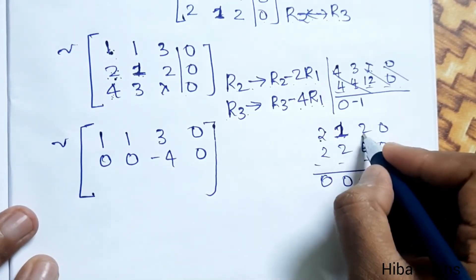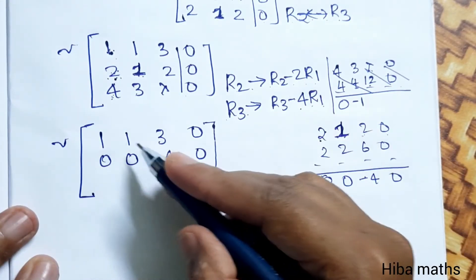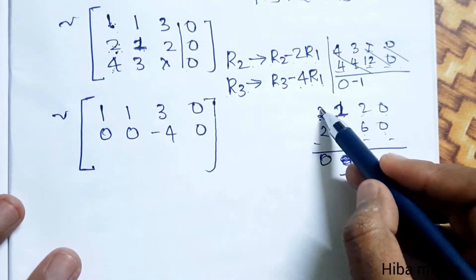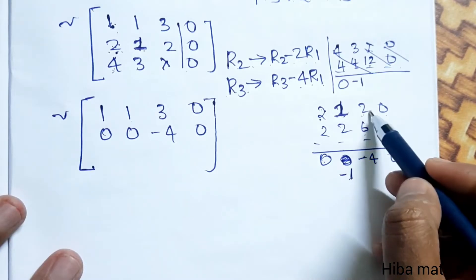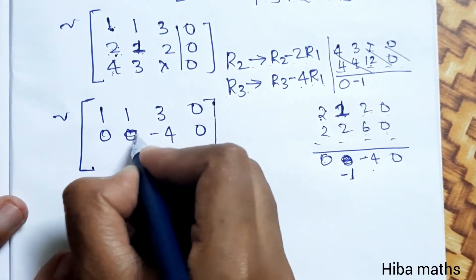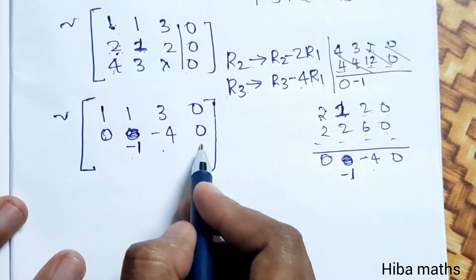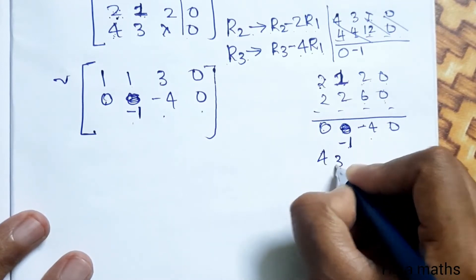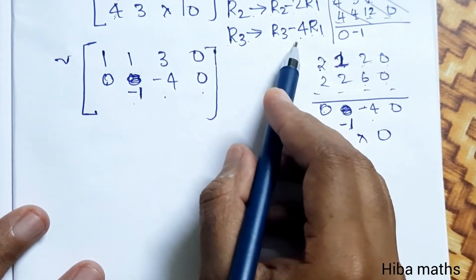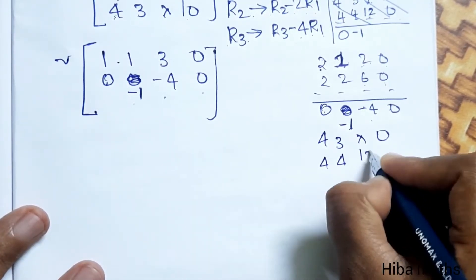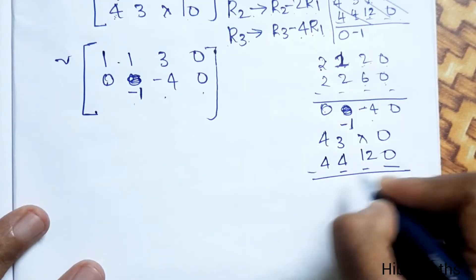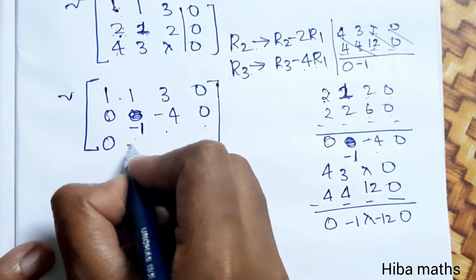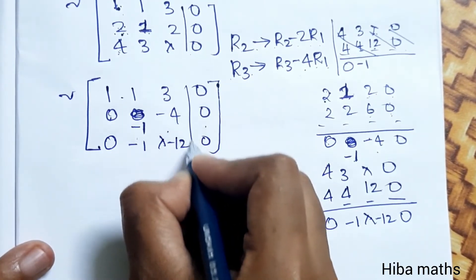For R2: 2 minus 2 times 1 gives 0, 1 minus 2 gives minus 1, 2 minus 6 gives minus 4, and 0. So R2 becomes 0, minus 1, minus 4, 0. For R3: 4 minus 4 gives 0, 3 minus 4 gives minus 1, lambda minus 12, 0. So R3 becomes 0, minus 1, lambda minus 12, 0.